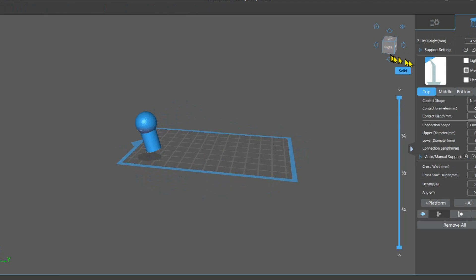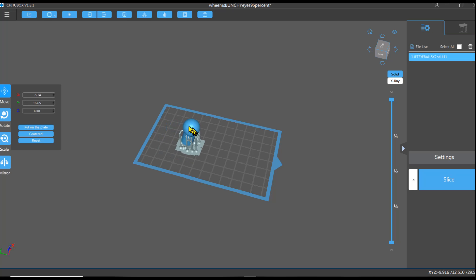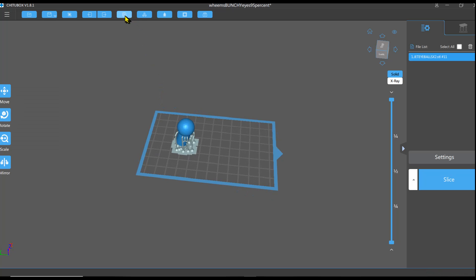In my support profile, I've got a Z height lift of 4.5. The rest of these contact shapes and dimensions are just default. All right, so here we have this guy. I'm going to put this a little bit more towards the center. I'm going to repeat this.